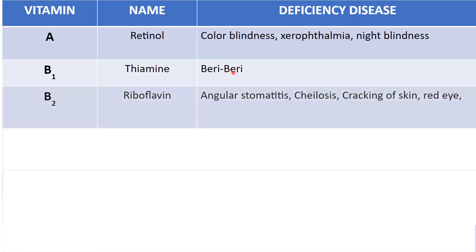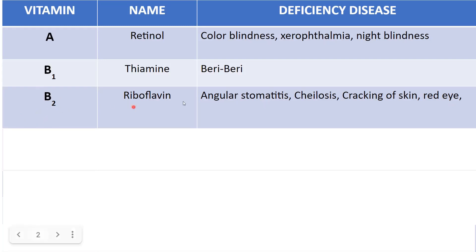Next is vitamin B2, which is riboflavin. Deficiency of B2 leads to angular stomatitis, cheilosis, and red eye. Angular stomatitis is a lesion at the corner of the mouth, and cheilosis is swollen or cracked lips. Vitamin B2 is necessary for proper development of the skin, the lining of the GI tract, and the formation of blood cells — therefore deficiency leads to skin disorders.